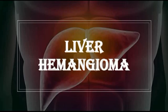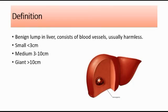In this video, I'm going to be talking about liver hemangioma. Liver hemangioma is a benign lump or tumor in the liver that consists of blood vessels. It is usually harmless, and the blood supply is from the arterial origin, the hepatic artery.